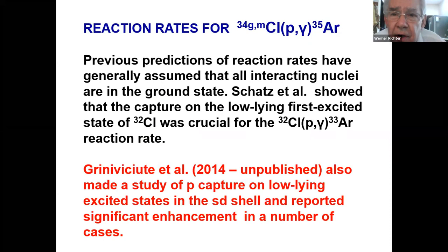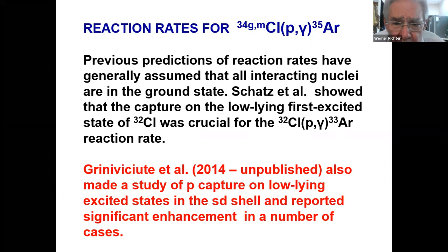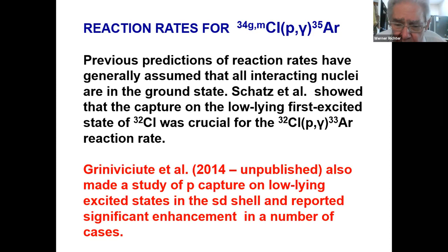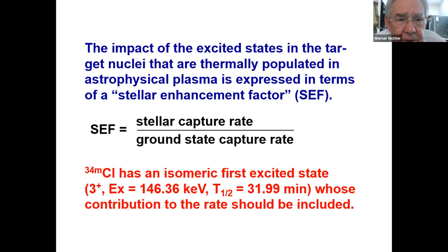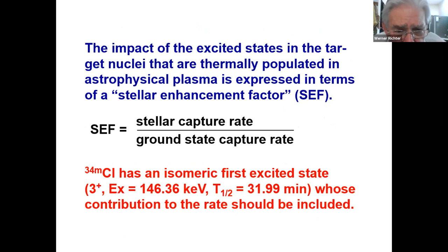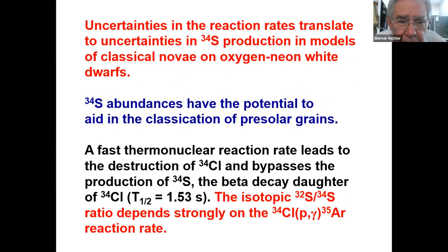Let's look at the reactions going to Argon-35. Many previous works just assumed the interacting nuclei were in the ground state, but it was shown that in the particular example of Chlorine-32 to Argon-33, capture on the low-lying first excited state made quite a contribution. There were other indications as well from a paper by Gillespie — somehow never published — but it did indicate again significant enhancement when you include excited states. So that gives us a stellar enhancement factor, which tells you how much the reaction rate changes due to incorporating the excited state. For Chlorine we have an isomeric first excited state, and the contribution to the rate was included in our work.